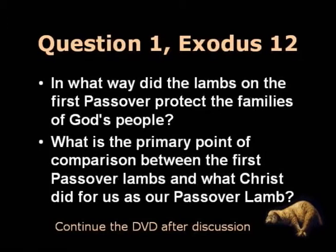We come to discussion question one. From Exodus 12: In what way did the lambs on the first Passover protect the families of God's people? What was the primary point of comparison between the first Passover lambs and what Christ did for us as our Passover Lamb? Pause the DVD now and discuss it, then resume when you finish your discussion.